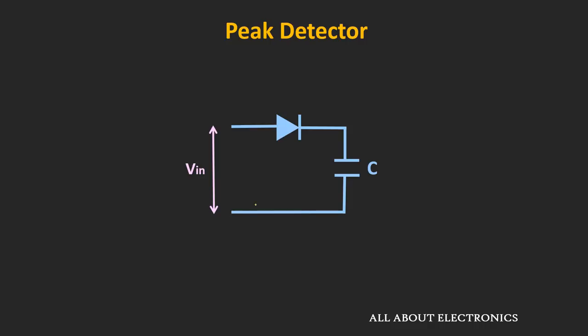The simple peak detector circuit can be designed just by using the diode and capacitor. The circuit over here will detect the positive peak value of the input signal, and the negative peak of the signal can be detected by just reversing the direction of this diode.